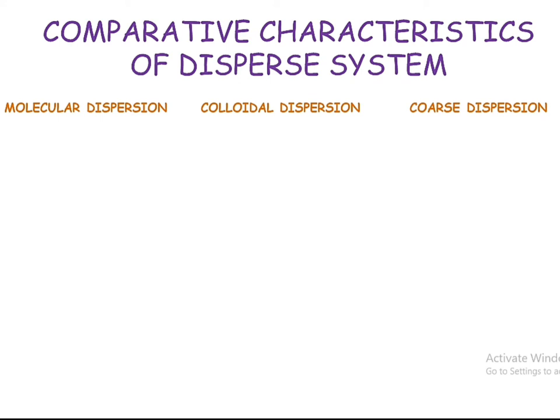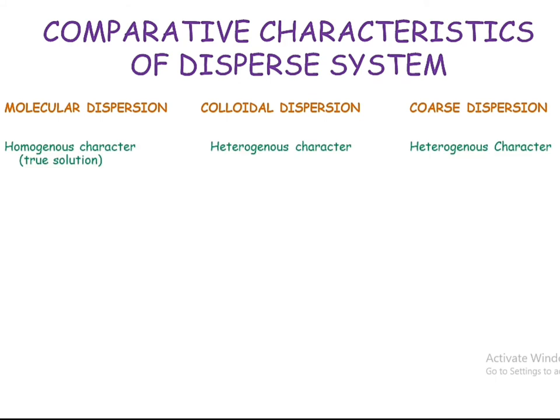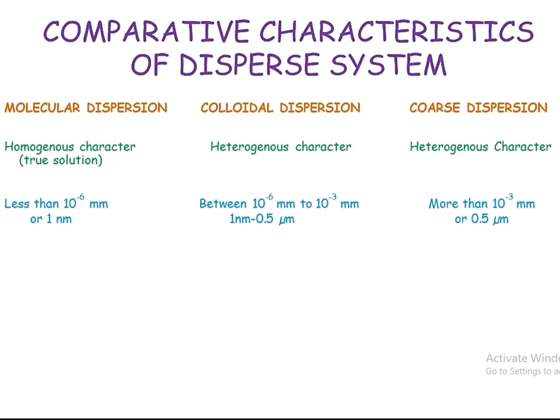Now let's look at the comparative characteristics of dispersed systems. The three types are: molecular dispersion, colloidal dispersion, and coarse dispersion. Regarding their nature, molecular dispersions are homogeneous and are also known as true solutions. Colloidal dispersions show heterogeneous character, meaning both phases can be separated. Coarse dispersions are also heterogeneous in character.